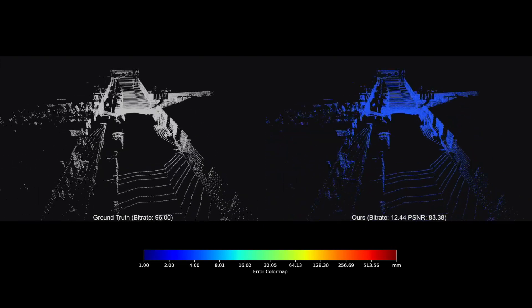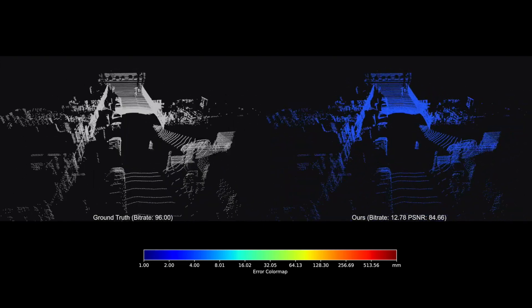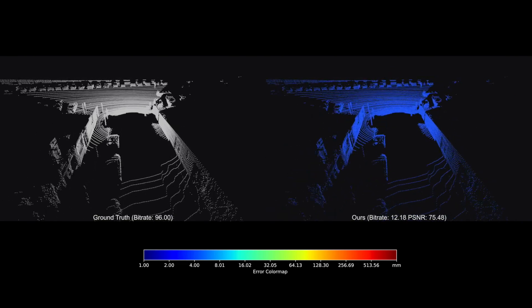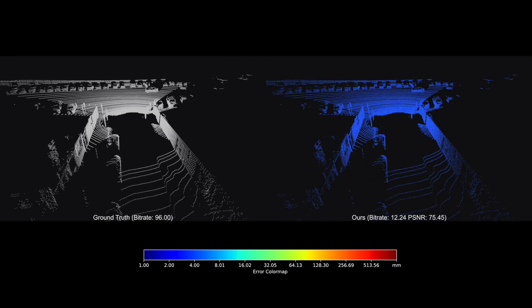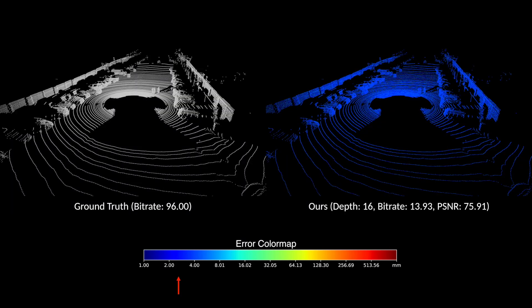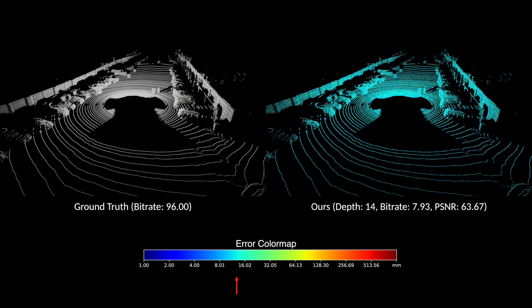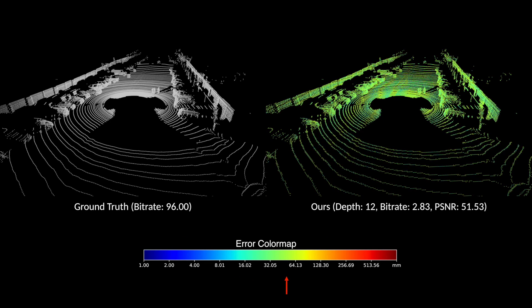From this side-by-side comparison, we see that point clouds compressed using our method retain high perceptual similarity to the original point clouds, while requiring much fewer bits of storage. Moreover, we can control compression rates by simply tuning the maximum depth of the octree. A smaller depth yields lower bitrates at the cost of higher distortion.